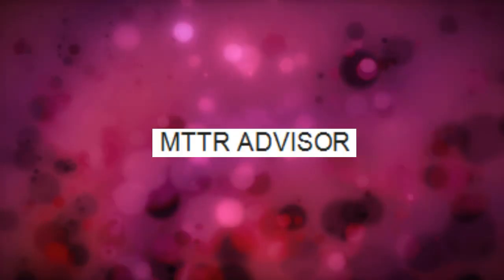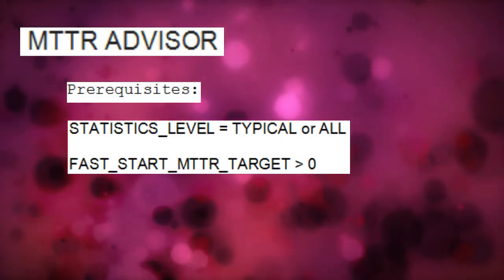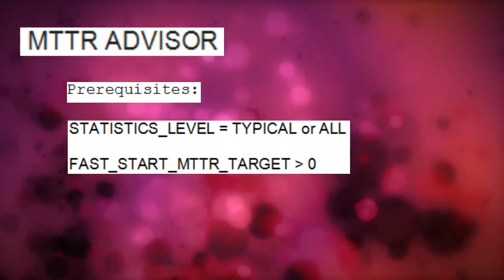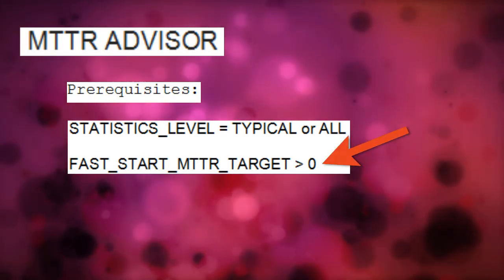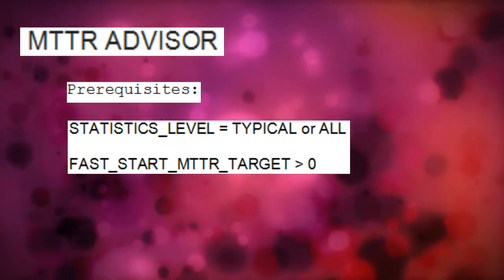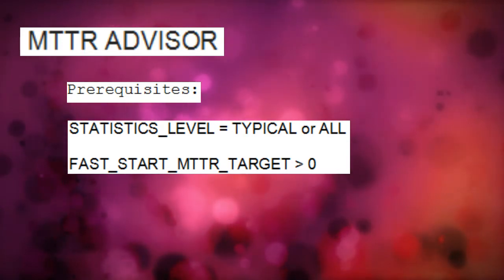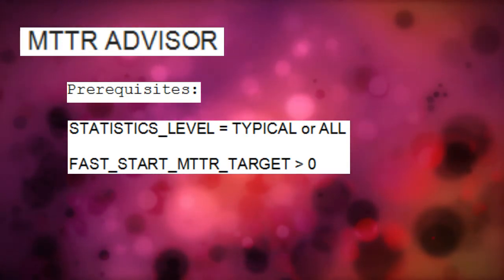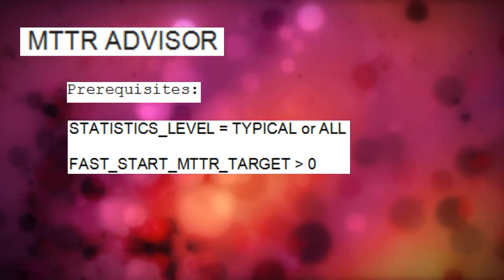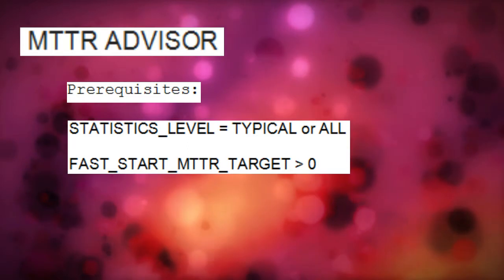Once the parameter has been set, also make sure the statistics_level parameter is set to either TYPICAL or ALL, as it is the first prerequisite to enable MTTR Advisor, and the second one is fast start MTTR target which should be greater than zero, which has already been configured. Now let your database run with the newly selected MTTR value for at least one week so that the database experiences all the different workloads and captures relevant information for MTTR Advisor.